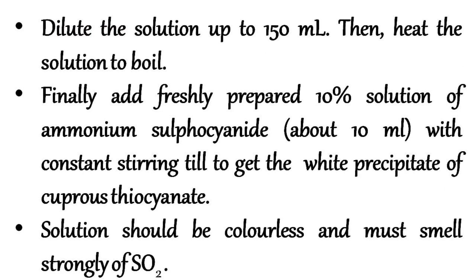Add a few drops of dilute hydrochloric acid and a slightly excess of freshly prepared sulfurous acid. Dilute the solution up to 150 ml using water, then heat the solution to boil. Finally, add a freshly prepared 10% solution of ammonium sulfocyanate — about 10 ml — with constant stirring until a white precipitate forms.